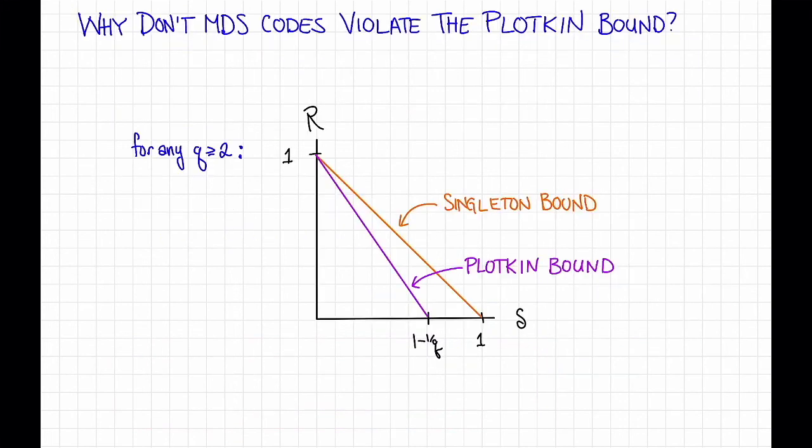Let's try to put MDS codes in the context of the bounds on rate-distance trade-offs that we've shown before. So remember that we had this picture. This is a picture of two of the bounds that we've seen before. We've seen the Singleton bound and the Plotkin bound. Both of these are impossibility results, and they say that trade-offs on this side of the line are impossible.